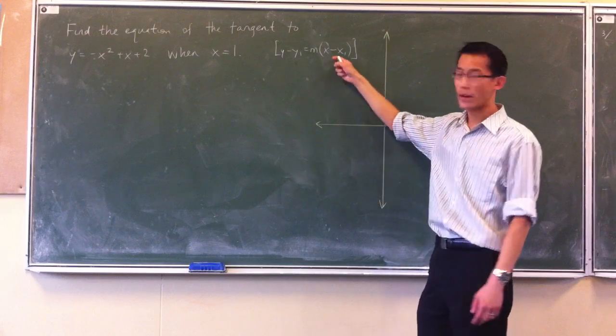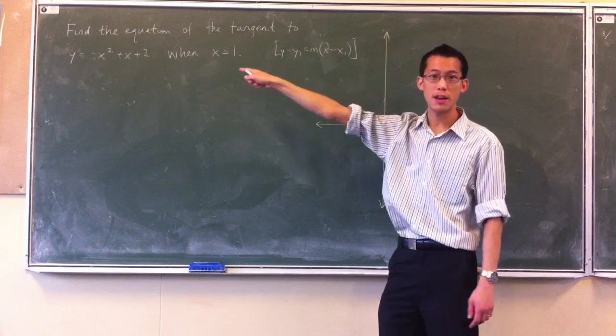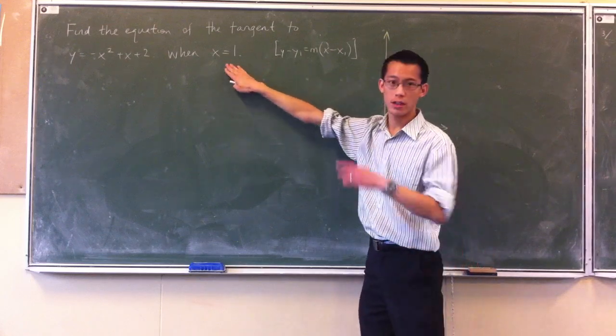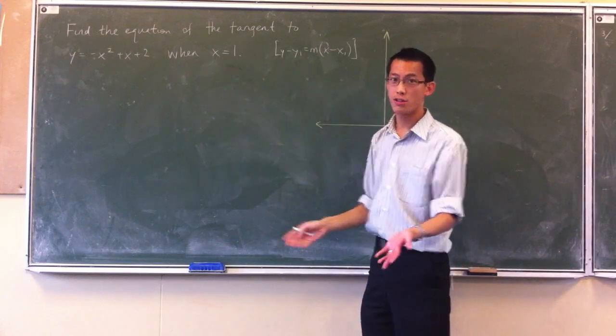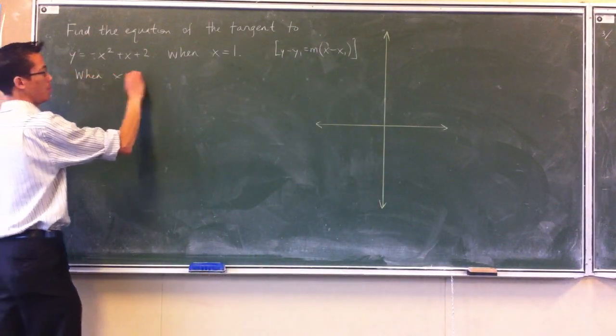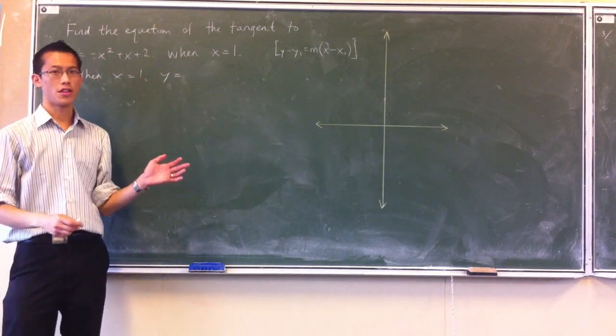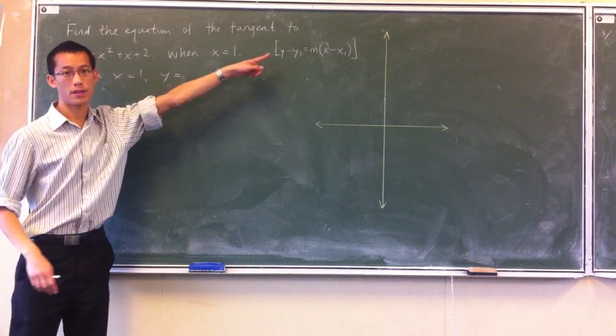Now, since we already have the x-coordinate, we can work out the y-coordinate really quickly just by substituting straight back in with our x-value into the equation. So let's do that first. Say, when x equals 1, y is equal to 2, and I'm just going to do a straight substitution here so that I have my y-value that I'm going to sub in for later.